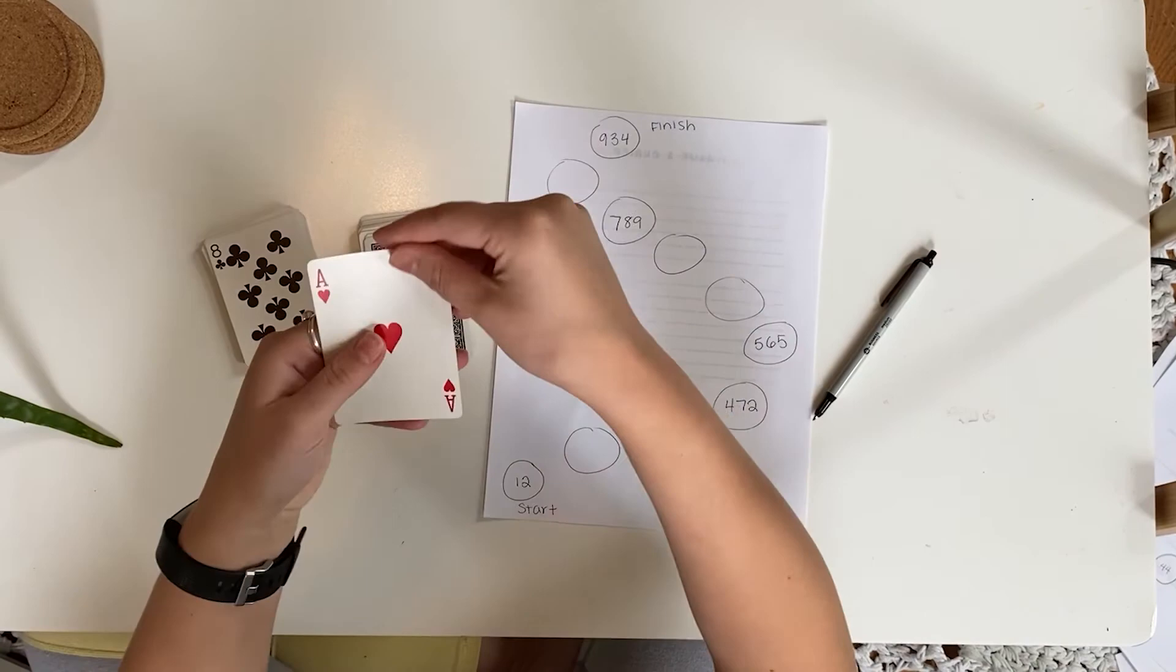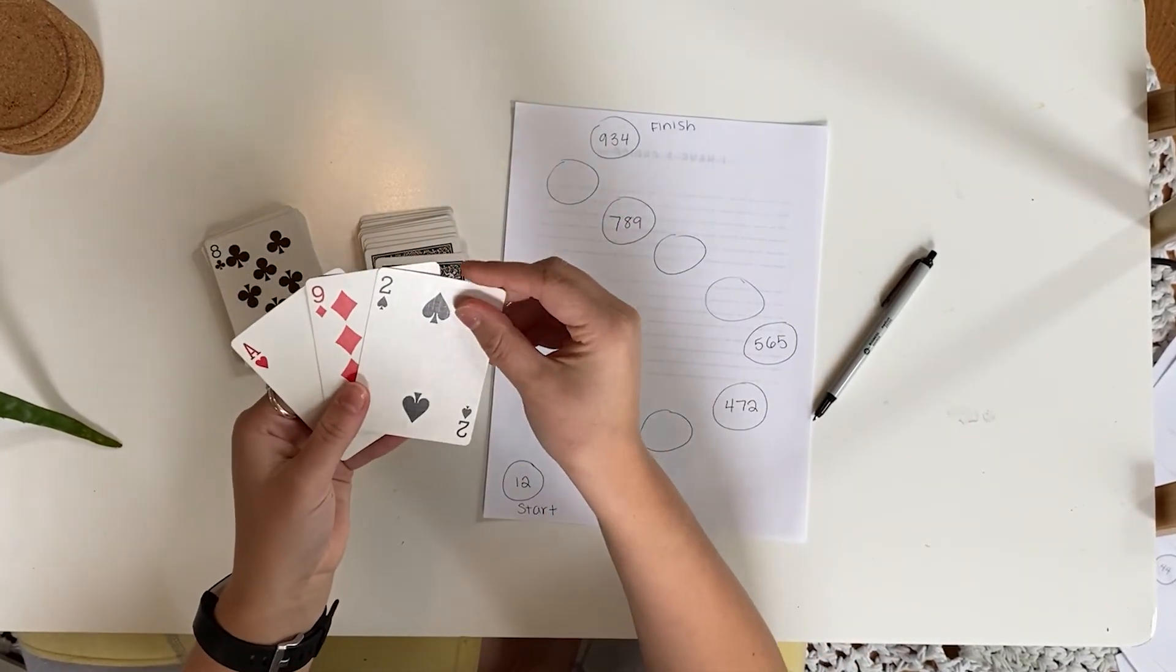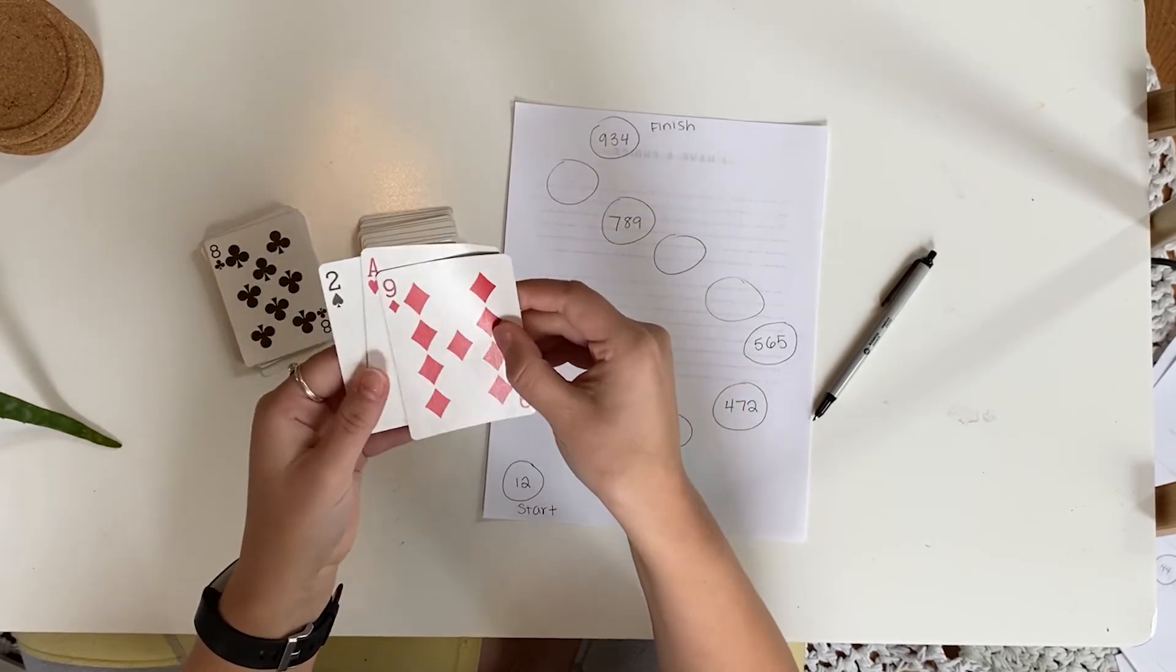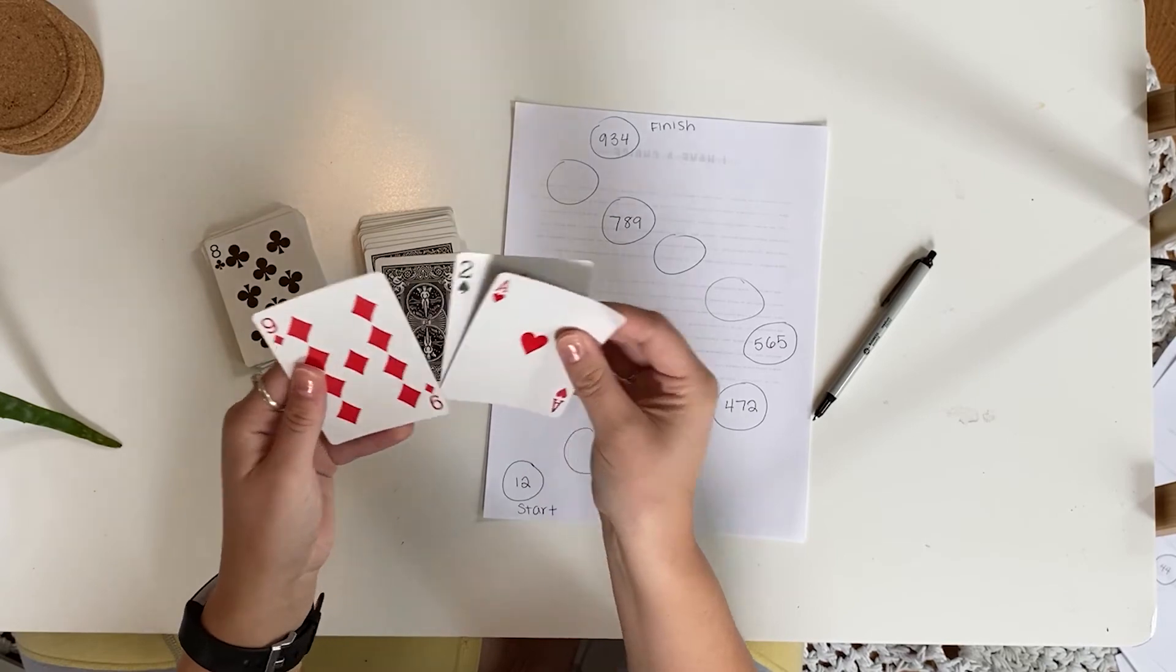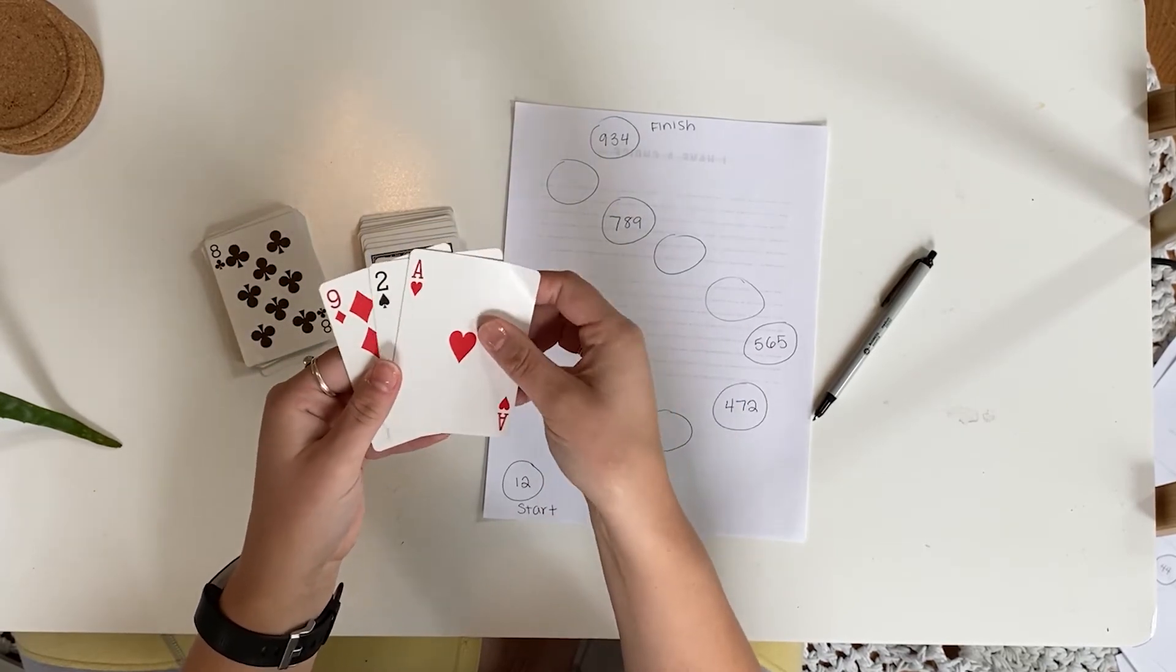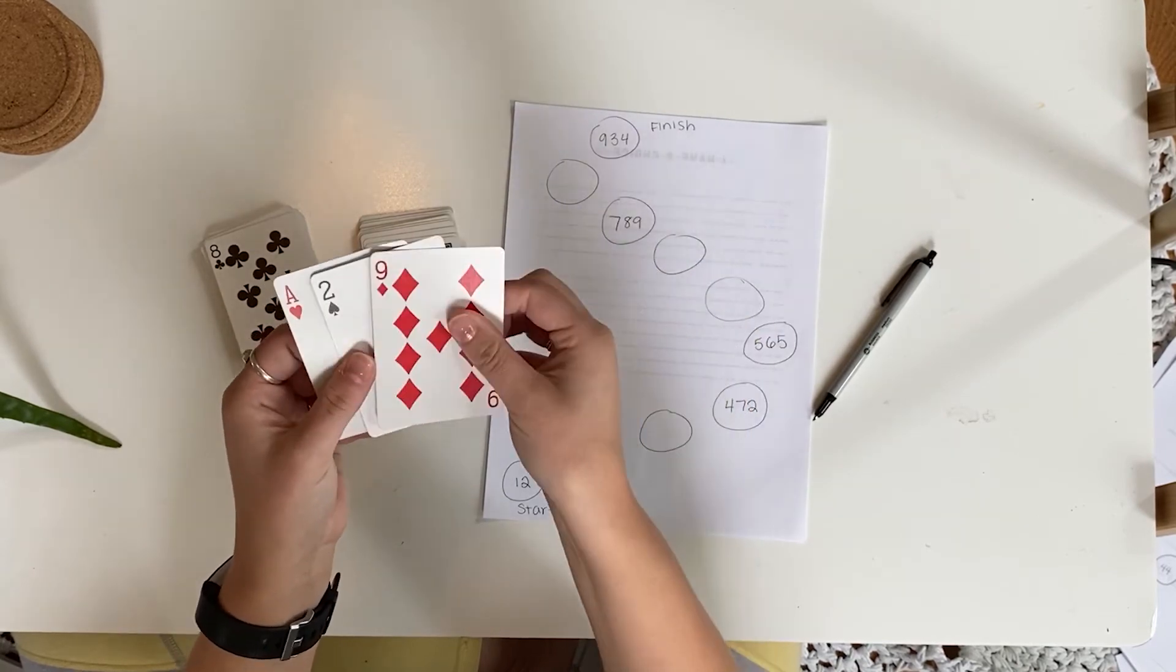One variation is to draw three cards and play from 0 to 999. With this, there is more variation on where to place the numbers.